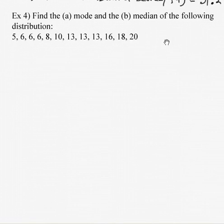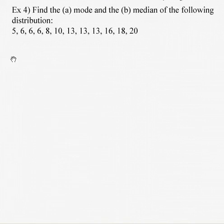Let's find the mode and median of the following distribution of scores: 5, 6, 6, 6, 8, 10, 13, 13, 13, 16, 18, 20. For the mode, looks like we've got a tie. 6 shows up 3 times, 13 shows up 3 times. So there's two modes, 6 and 13.